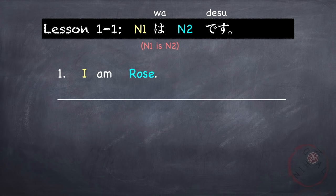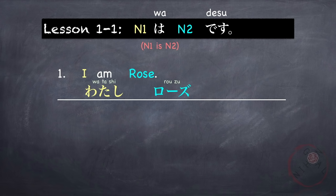Our first example is 'I am Rose.' The first thing you would say aside from a greeting is introducing yourself — I am, and then your name. I in Japanese is watashi. Rose in katakana is ロース. Using the pattern above, let's make this into a full sentence: Watashi wa Rose desu. I am Rose. Very simple.